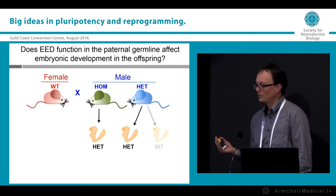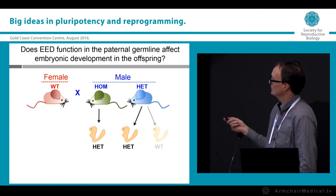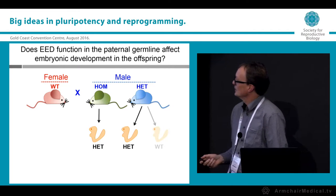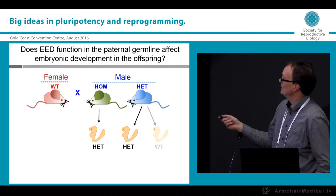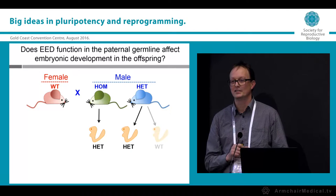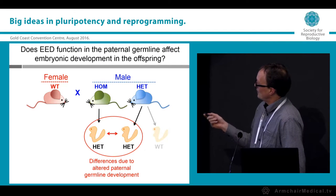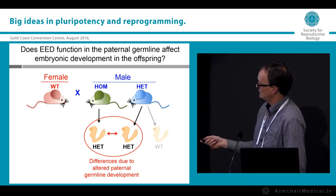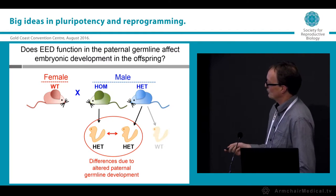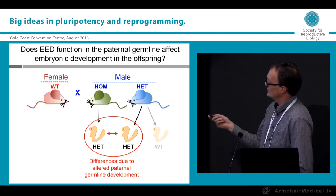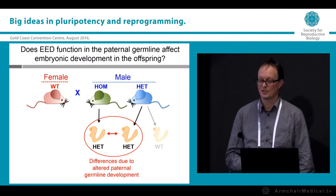Wild-type females were mated to males either homozygous or heterozygous for the EED mutation. Homozygous males have sperm developed in the absence of any functional EED, whereas heterozygous males have sperm developed with one good copy of EED, which we consider relatively normal controls. Both can produce heterozygous offspring, so we can compare these genetically equivalent offspring and look for differences indicating that sperm epigenetic state differs depending on the father's EED genotype.